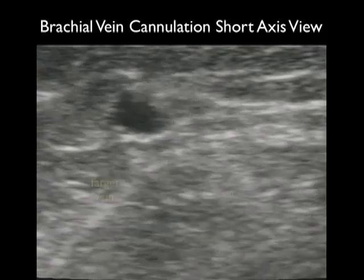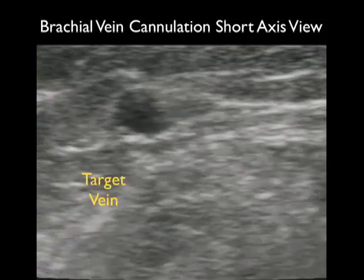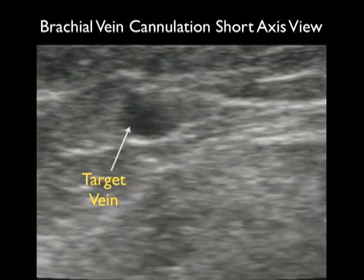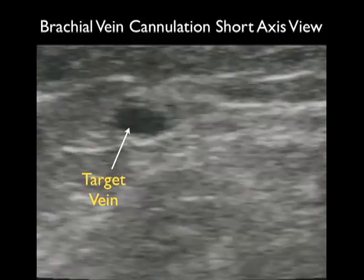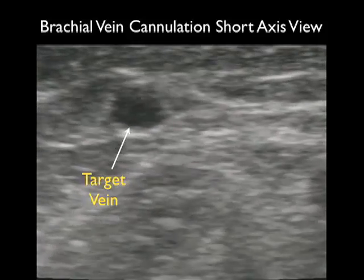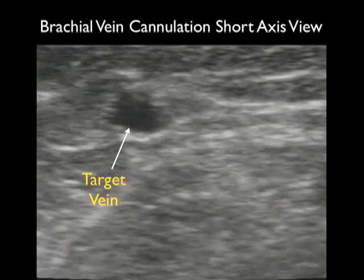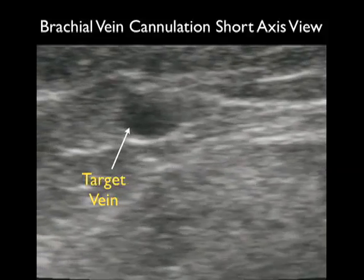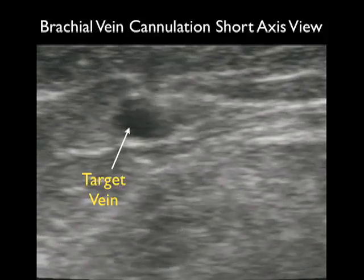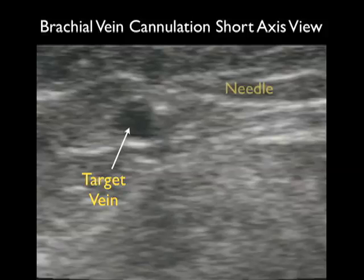This video clip shows successful cannulation of a brachial vein using the short axis technique. Notice we see the vessel and the echogenic tip of the needle coming down from the surface, permeating the anterior wall of the vessel, with the echogenic tip right within the vessel lumen.